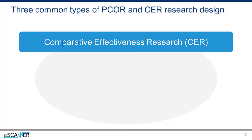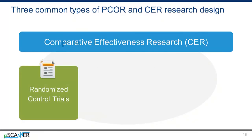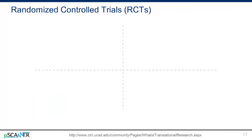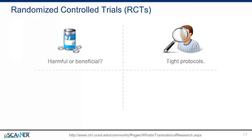There are many different ways to design a research study. Three research designs commonly used to conduct PCOR and CER are randomized controlled trials, pragmatic trials, and observational studies. The purpose of a randomized controlled trial, or RCT, is to discover if a treatment or intervention provides greater benefit than harm — this is called efficacy. RCTs are conducted in specific settings with tightly controlled protocols. They compare a group of participants who receive a treatment or intervention, an intervention group, with another group that does not, a control or comparison group.